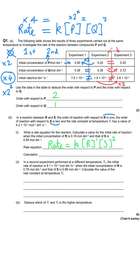We need to calculate the initial rate of reaction when [R] = 0.16 and [S] = 0.84. We substitute those values in: rate = 4.2×10⁻⁴ × 0.16¹ × 0.84², which gives 4.7×10⁻⁵. That's three marks — one for the rate equation, one for the substituted values, and one for the final value for the rate of reaction.